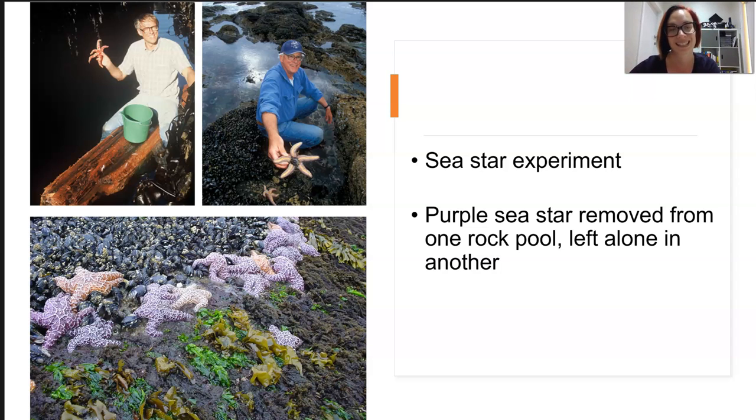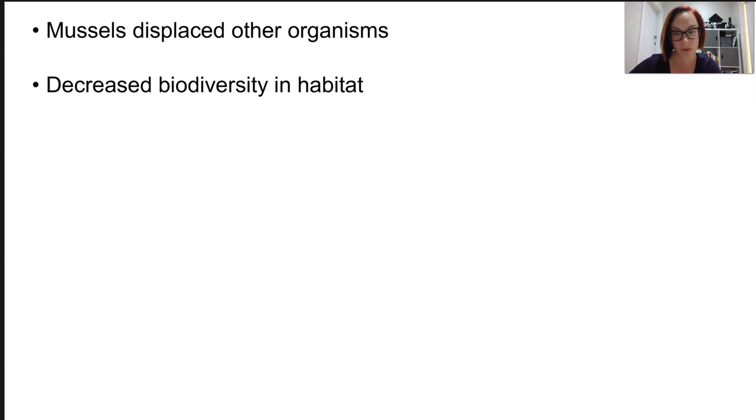as soon as the sea star were gone, the muscles were living the dream. And suddenly, with no natural predator, their numbers increased significantly. Because the muscle population numbers increased so dramatically, they began to displace other organisms which shared their habitat, generally barnacles. The muscles fed on limpets until their numbers plummeted and overall, they decreased the number of unique species in the rock pool.